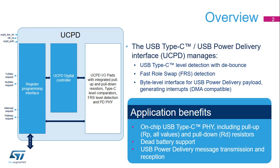The UCPD unit embeds a PD physical layer, or PHY, with a direct connection to the configuration channel pins CC1 and CC2. The UCPD can be configured as a downstream facing port (DFP), an upstream facing port (UFP), and also supports the fast role swap protocol that enables swapping DFP and UFP states. In order to implement the protocol layers based on message exchanges over CC1 or CC2, the UCPD offers a programming interface enabling software to receive or send message payload bytes.